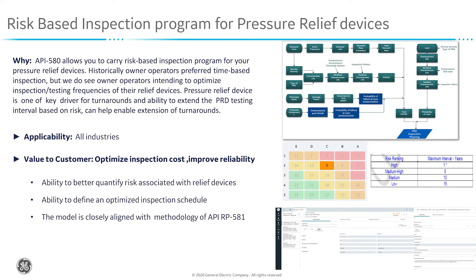Historically, owner-operators do prefer a time-based approach just to make sure that they're not taking too much of a risk, but now we do see owner-operators intending to optimize the inspection or testing frequency of their relief devices. The pressure relief device is one of the key drivers for typical turnarounds, and the ability to extend the PRD testing interval based on a well-defined risk methodology can help enable extension of turnarounds.